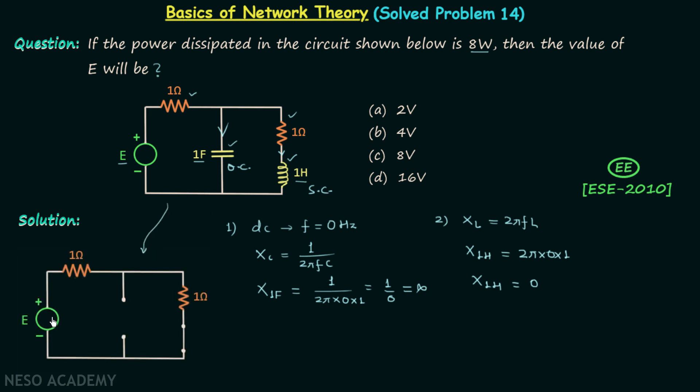Hence we can redraw our network like this: open circuited capacitor, short circuited inductor. Now you can see that we have two resistors in series and they are in series with our voltage source. Let's say the current in the circuit is equal to I, and therefore current I will be equal to E divided by 1 plus 1, that is 2. Let's say this is equation number 1.